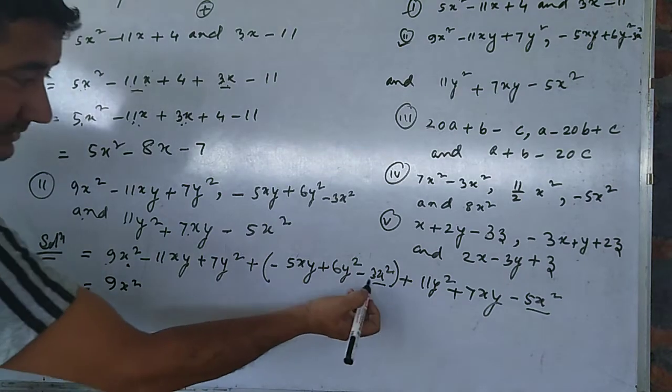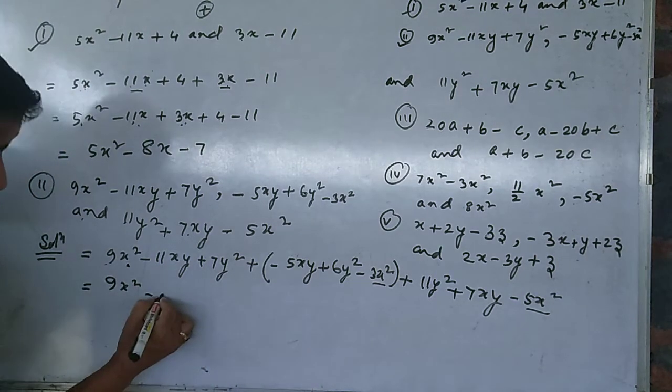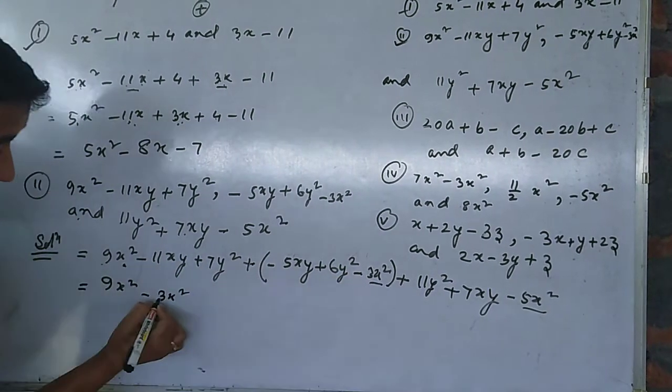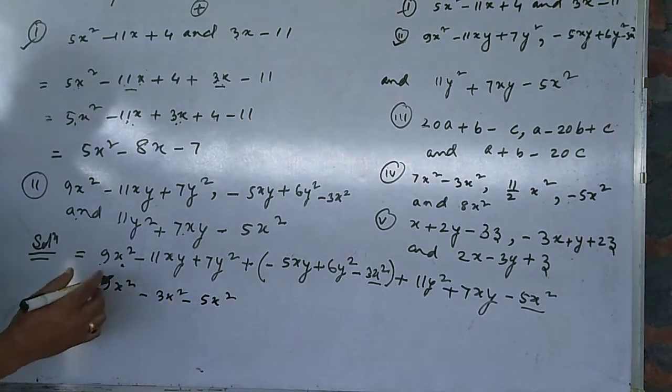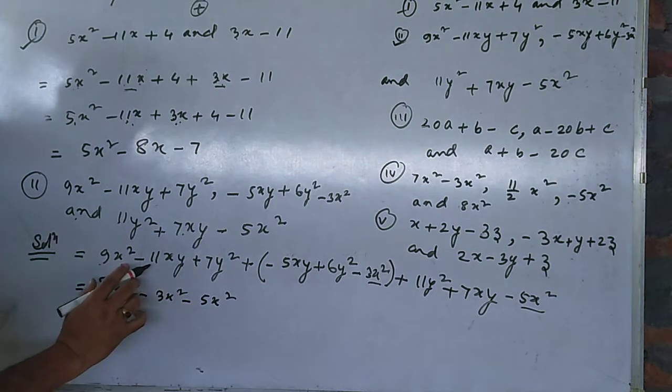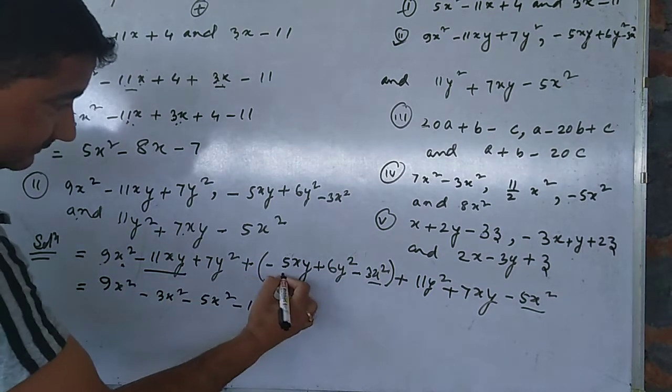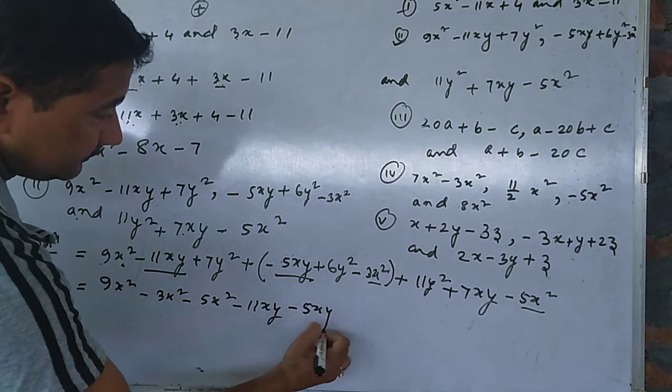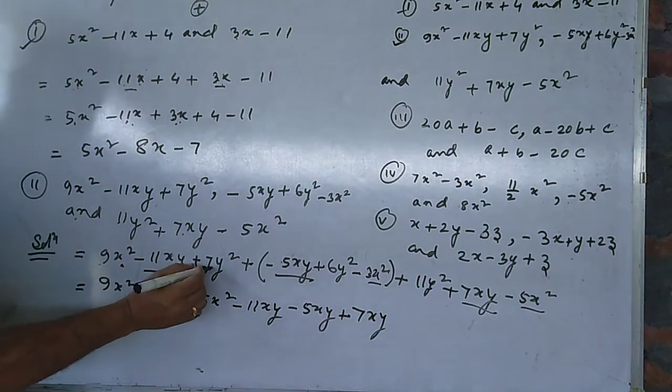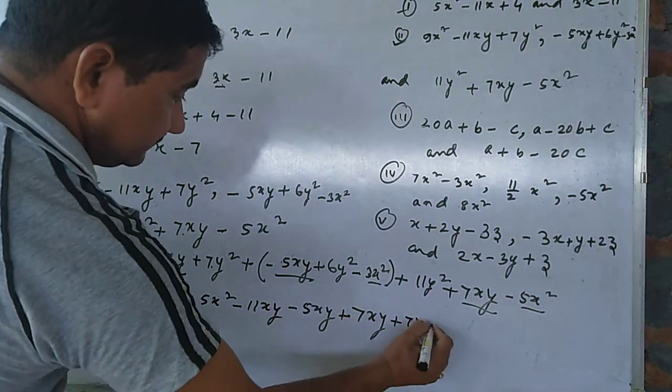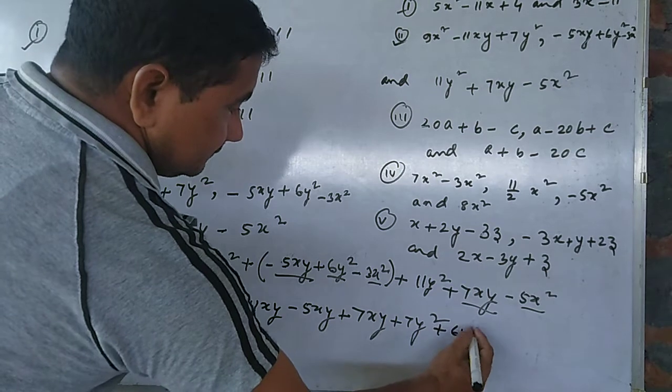First like term: 9x² - you see the x² terms here, here, and here. Write the square terms: 9x² minus 3x² and minus 5x². Now xy terms: minus 11xy, 5xy, and 7xy. Now y² terms: 7y², 6y², and 11y².